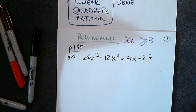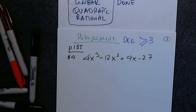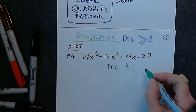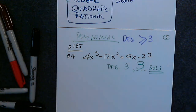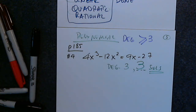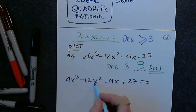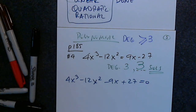The degree is 3, so we expect 3 solutions. If the degree is 10, there are 10 solutions, and so on. First, set everything equal to 0: 4x cubed minus 12x squared minus 9x plus 27 equals 0. It's already in descending order. The coefficients 4, 12, 9, and 27 have no common factor. The only method for this type of polynomial is factoring by grouping.